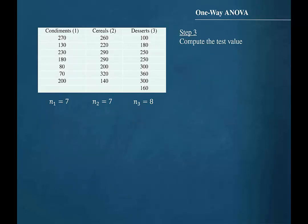In order to remain consistent with the symbols used in this process, it is necessary that we identify each population. We will designate the condiments as population 1, cereals as population 2, and desserts as population 3.